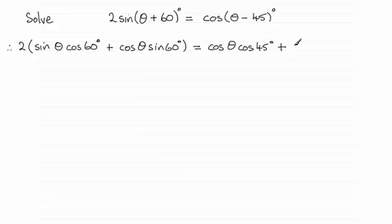sin a times sin b, so that's sin θ times sin 45°.